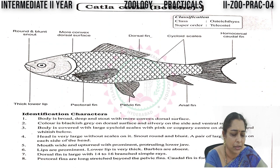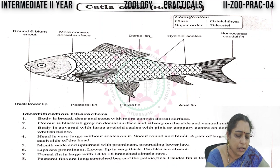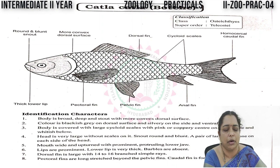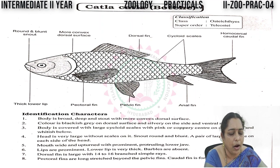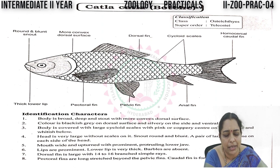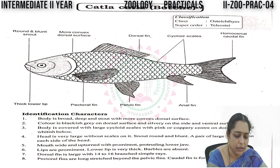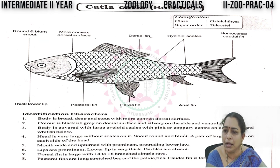Now let us draw the diagram and see the labeling of this animal: round and blunt snout, more convex dorsal surface, dorsal fin, cycloid scales, homocercal caudal fin, genal fin, pelvic fin, pectoral fin, and thick lower lip. These are the labelings.